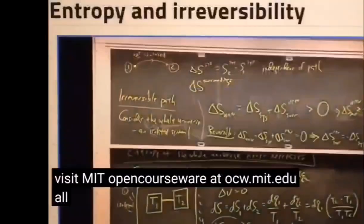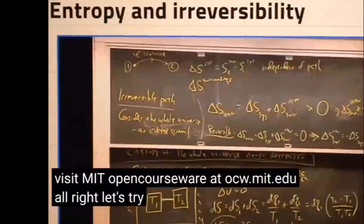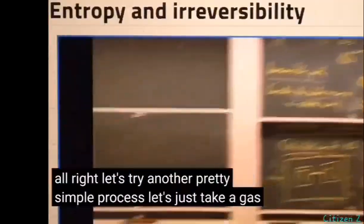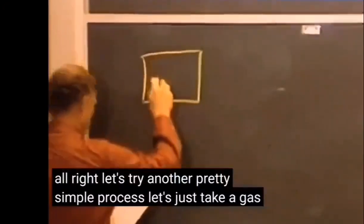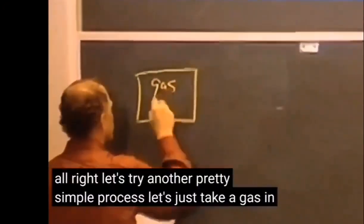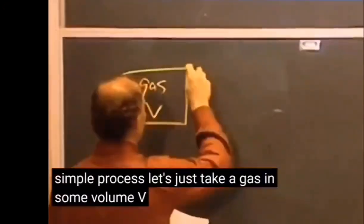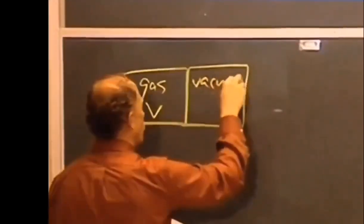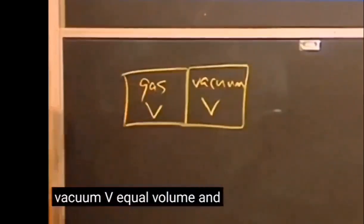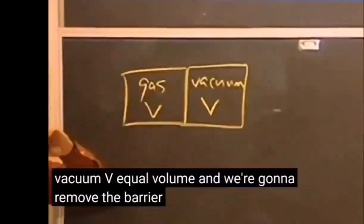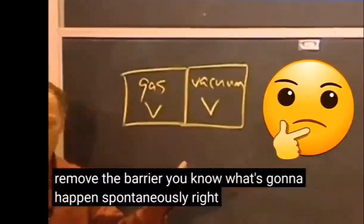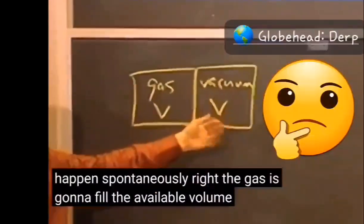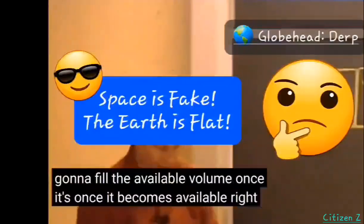Let's try another pretty simple process. Let's take a gas in some volume V, and over here is going to be a vacuum of equal volume. We're going to remove the barrier. You know what's going to happen spontaneously — the gas is going to fill the available volume once it becomes available.